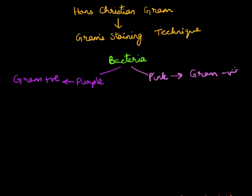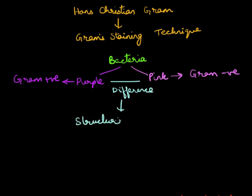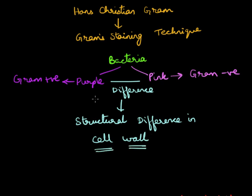The bacteria that stained purple were termed Gram positive, while the bacteria that stained pink were termed Gram negative. Later, the invention of the electron microscope clarified that this color difference is due to a structural difference between the cells of Gram positive and Gram negative bacteria. To understand each step of the protocol, listen to the Gram staining video in the practical section.